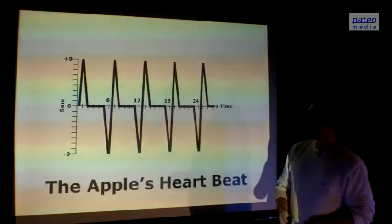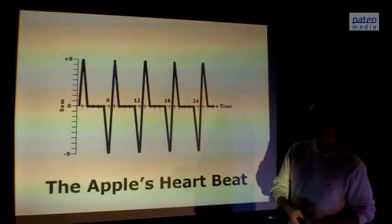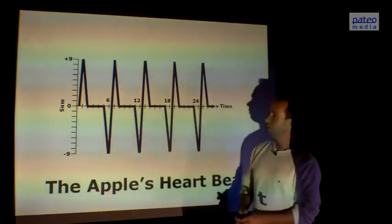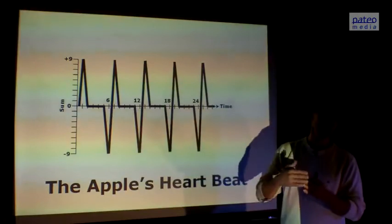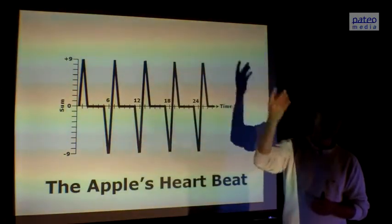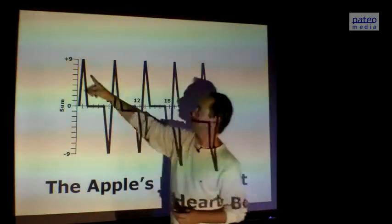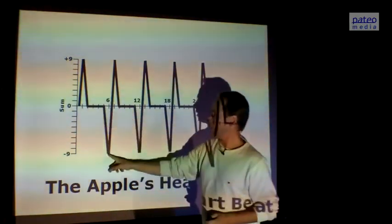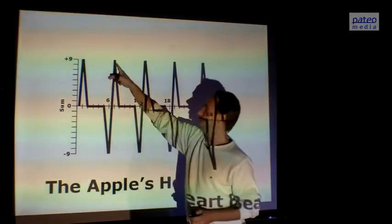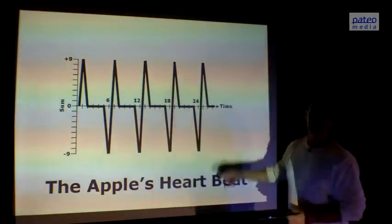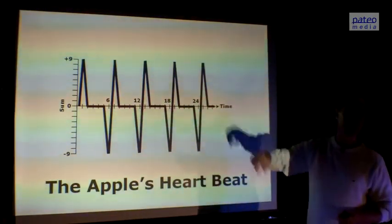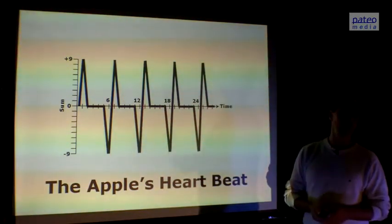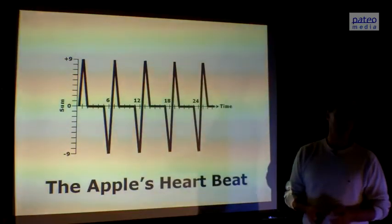So what we now in fact have is the heartbeat of the apple. Because if we add up the ciphers that are next to each other when they pass through the core of the apple, we get first the plus 9 value, then a couple of zeros, then the minus 9. This is nearly about the same thing we see when we measure our heartbeat. This is the heartbeat of the apple, the energetic heartbeat of the flow world.